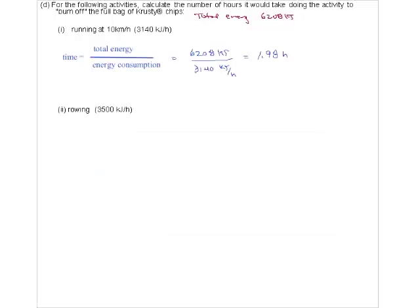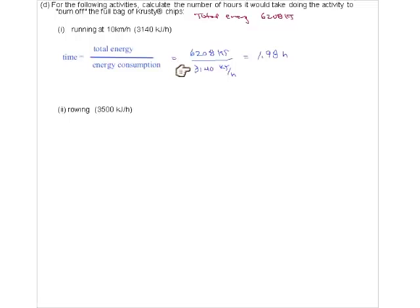For a brisk run at 10 km/h - fast walking is about 6 km/h, so this is a nice jog - you burn about 3,000 kilojoules per hour. The time required = total energy ÷ energy consumption rate = 6,000 kJ ÷ 3,000 kJ/h = two hours of jogging to burn off that bag of chips.